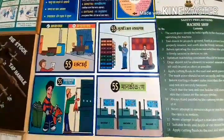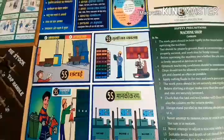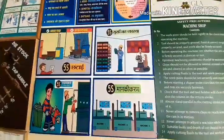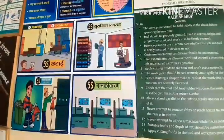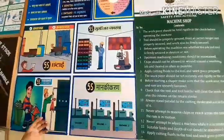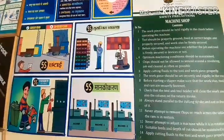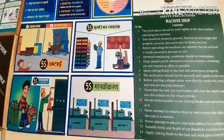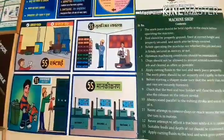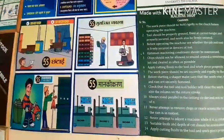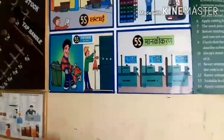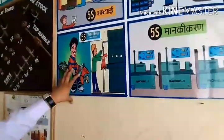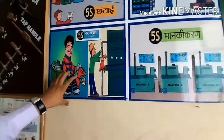The second S means Set in Order. Set in order means that whatever you need immediately should be kept near the machine, and whatever you need later stays a little further away. The third S is Shining, which means keeping the workplace clean.